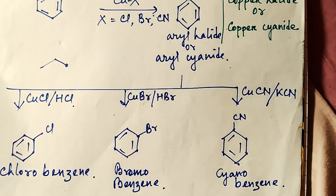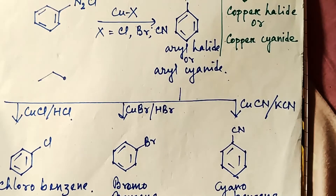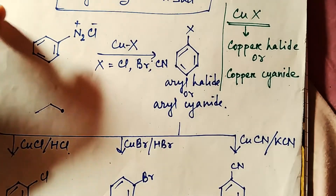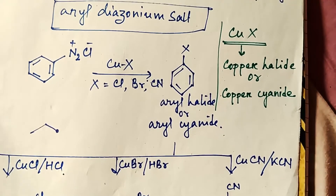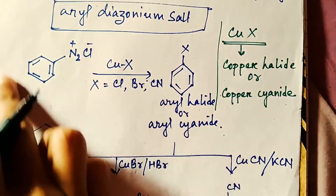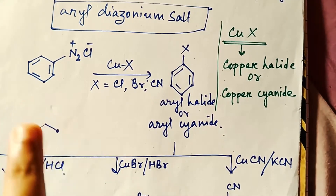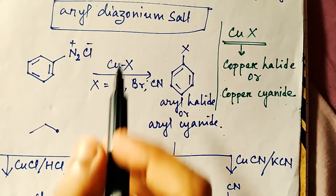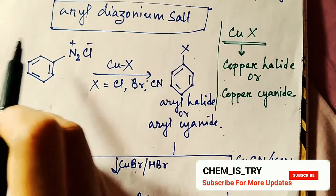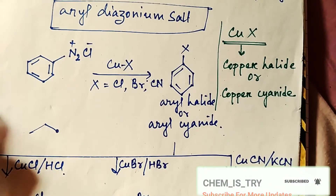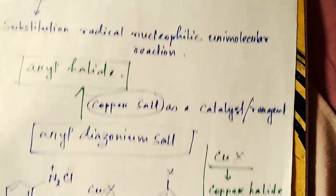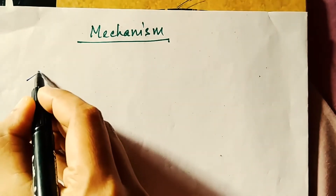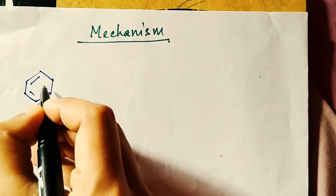Here is a diagrammatic chart showing these products. Now let us move to the mechanism — how the diazonium salt actually reacts with the copper salt. If you want to know how to form the diazonium salt, the link is given in the description box below. Without this salt, you cannot perform the Sandmeyer reaction. Now let's move to the reaction mechanism.